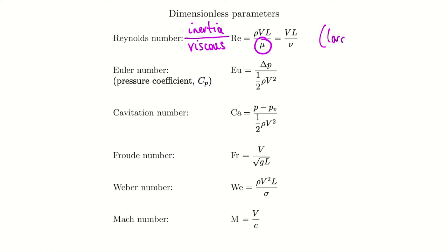The Euler number writes out the pressure forces over the inertia forces — the pressure term is on top, so it's pressure forces over inertia forces. We generally use the Euler number when looking at a surface and wanting to see the local pressure experienced there. It relates local pressure to rho·V², and we write half·rho·V² on the bottom. Because these are dimensionless, multiplying numerator and denominator by the same factor doesn't change them. So that half·rho·V² on the bottom represents dynamic pressure, giving a more meaningful relationship between local pressure and the dynamic pressure of the flow.